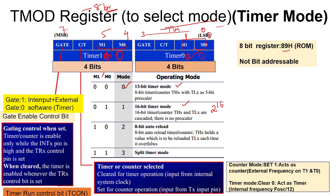If M1 M0 is configured as 1-1, it works as a split timer mode. How these modes work and what is the logic behind everything will be discussed in the coming lectures. This is only for understanding what each bit is specifying.